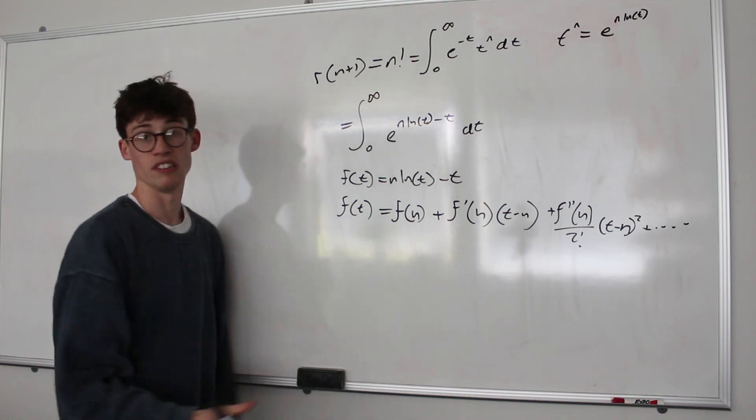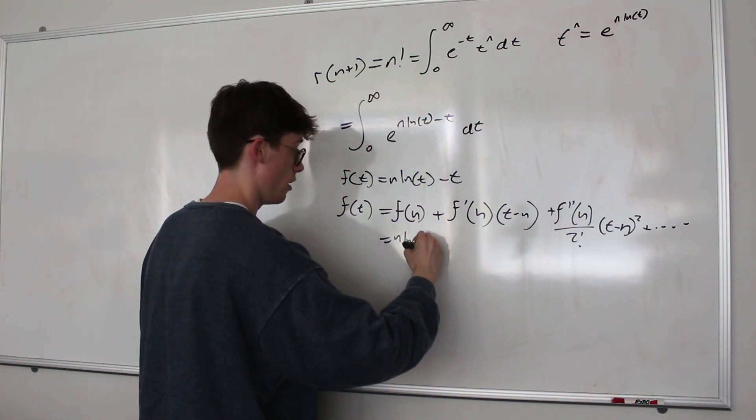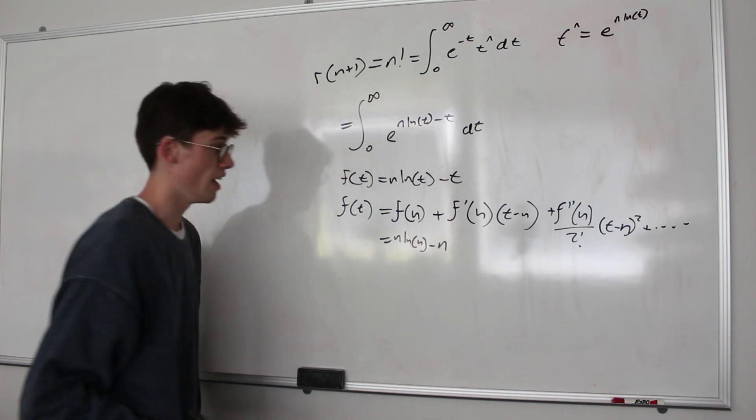So f of n is obviously very easy to calculate. We would just swap out all our t's for n's. And we get n ln n minus n.